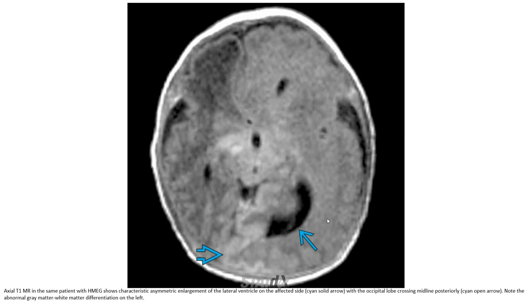This is the axial T1 image, showing characteristic asymmetric enlargement of the lateral ventricle on the affected side with the occipital lobe crossing midline. Note the abnormal gray matter-white matter differentiation.